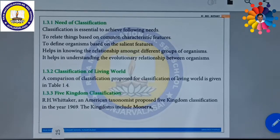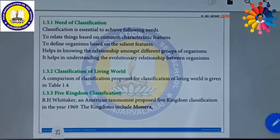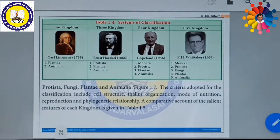Classification of living world. A comparison of classification proposed for the living world — I shall explain with a table column. This table will help us understand various types of classification: two kingdom classification, three kingdom classification, four kingdom classification, and five kingdom classification.